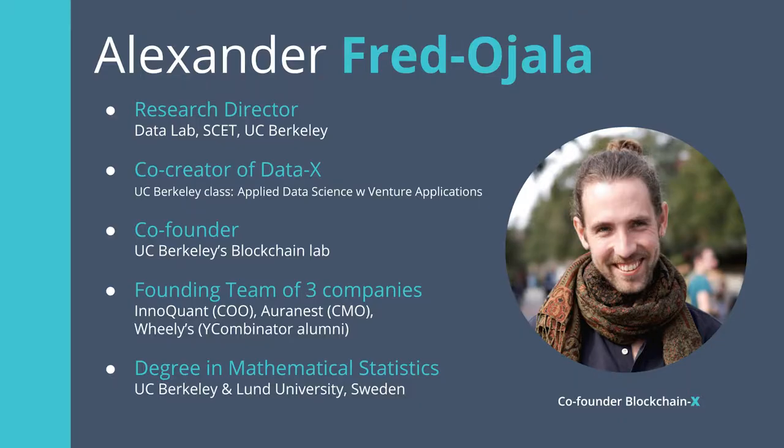My name is Alexander. I'm a research director at UC Berkeley. My main fields are data science, machine learning, and artificial intelligence. But I've also had a true passion for blockchain technology for the past three years. Three years ago I looked into an initiative to improve the remittance process and transfer humanitarian aid to developing countries with the UN using blockchain technology. Right now I'm also the co-founder of UC Berkeley's Blockchain Lab. I've been part of the founding team of three companies and my academic background is in mathematical statistics.